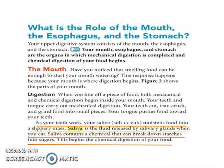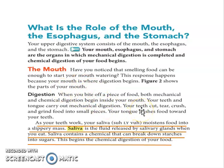What is the role of the mouth, esophagus, and stomach? Let's start with the mouth. Have you noticed that smelling food can be enough to start your mouth watering? This response happens because your mouth is where digestion begins. Our mouth has three helpers of digestion. The first is teeth. Our teeth can cut, tear, crush, and grind food into smaller pieces.